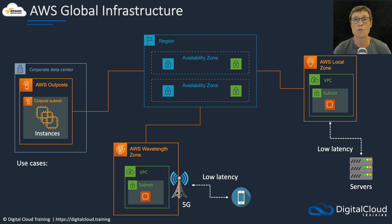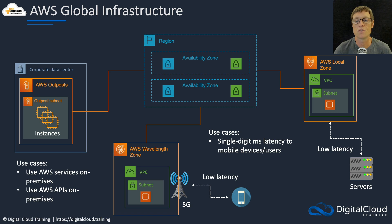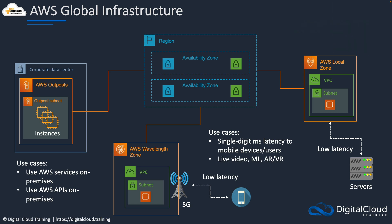So what are the use cases for each? AWS Outposts is used to run AWS services in your on-premises data centers so that you can use AWS APIs on-premises. Wavelength zones are about getting single digit millisecond latency to mobile devices and end users — they're good for live video, machine learning, augmented reality, and virtual reality. And for local zones, we use these for single digit millisecond latency to end users and applications, and again for similar use cases as the wavelength zone.